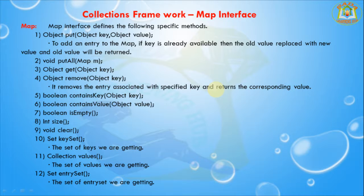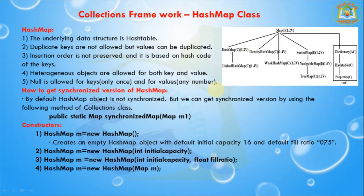HashMap is a child class of the Map interface. The underlying data structure is a hash table. Duplicate keys are not allowed, but values can be duplicated. Insertion order is not preserved and is based on the hash code of keys. Heterogeneous objects are allowed for both keys and values. Null is allowed for keys only once, and for values any number of nulls are allowed.